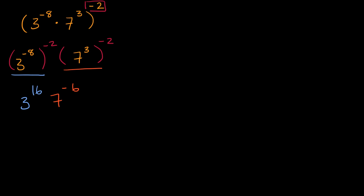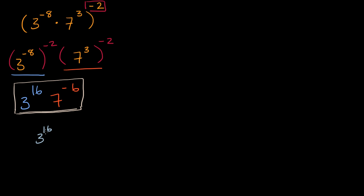This would be about as much as you could simplify it. You could rewrite it different ways. Seven to the negative six is the same thing as one over seven to the sixth. So you could write it like three to the sixteenth over seven to the sixth. But these two are equivalent.